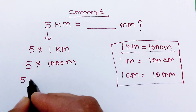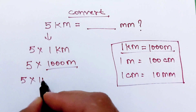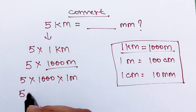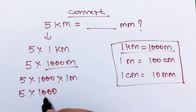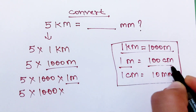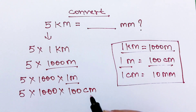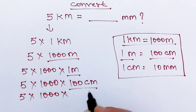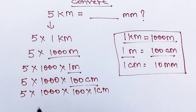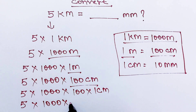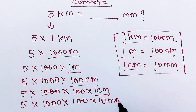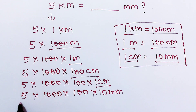Further solving this, 5 multiplied by 1000 meters — here 1 meter can be written as 100 centimeters, so we substitute to get 5 multiplied by 1000 multiplied by 100 centimeters. Then, 1 centimeter is equal to 10 millimeters, so we substitute again, and the kilometers are fully converted into millimeters.